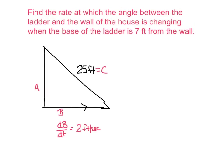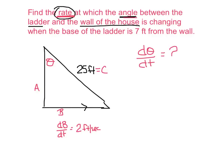The question is: find the rate at which the angle between the ladder and the wall of the house is changing — that's dθ/dt — specifically when the base of the ladder is 7 feet from the wall, so b = 7. Once I've labeled A, B, and C, I know two sides: 7 feet and 25 feet. You should recognize this is a Pythagorean triple — 7, 24, 25 — so side A is 24 feet.